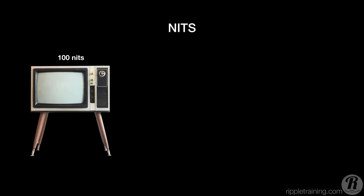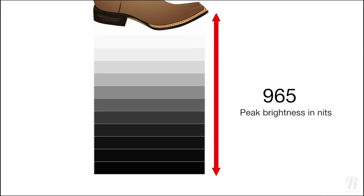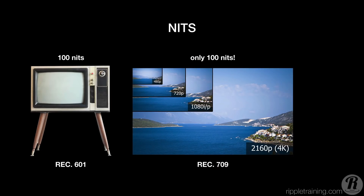That limit is part of not only the SD Rec. 601 standard, but also part of the Rec. 709 HD standard. That means when SD, HD, or even UHD video is encoded for display, all brightness values are squeezed into the range of 0 to 100 nits. The way the brightness values get recorded and displayed is through a mathematical conversion called a gamma curve.